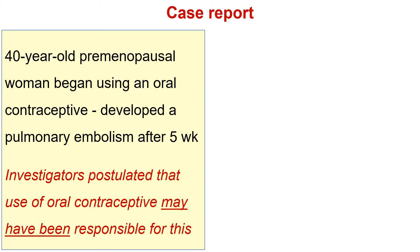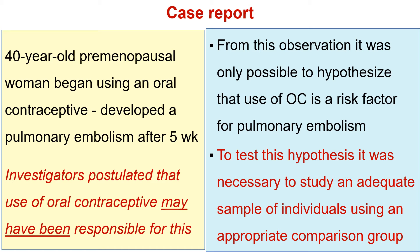This is another example of a case report. A 40-year-old premenopausal woman started using oral contraceptive pills, and after five weeks she developed a pulmonary embolism. From this report, the investigators hypothesized that the use of oral contraceptives was responsible for the development of pulmonary embolism. However, from this observation, it was only possible to generate this hypothesis — it was not possible to test it.